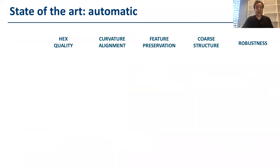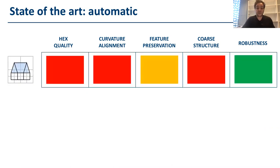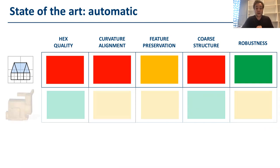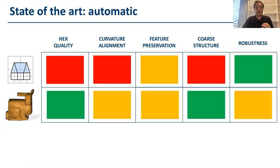Here we briefly sketch the advantage of each class of methods. Grid-based methods are very robust. However, generally they fail to align to the curvature direction and the quality of elements is generally very low. Polycube methods can produce nicer meshes, but sometimes they fail to align to the curvature and the features.